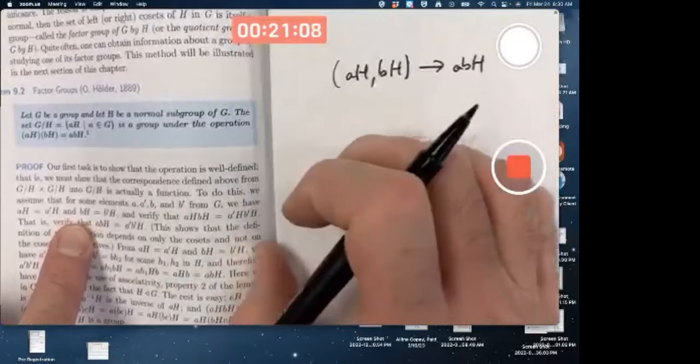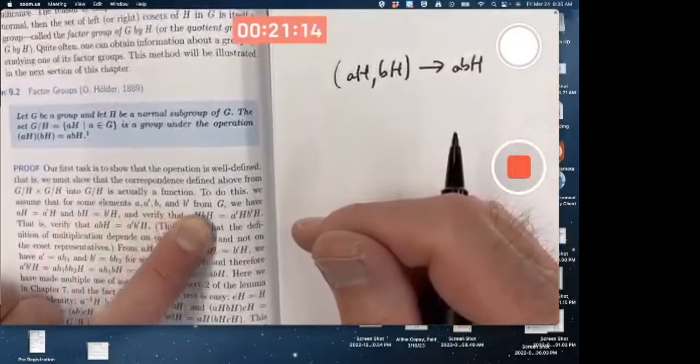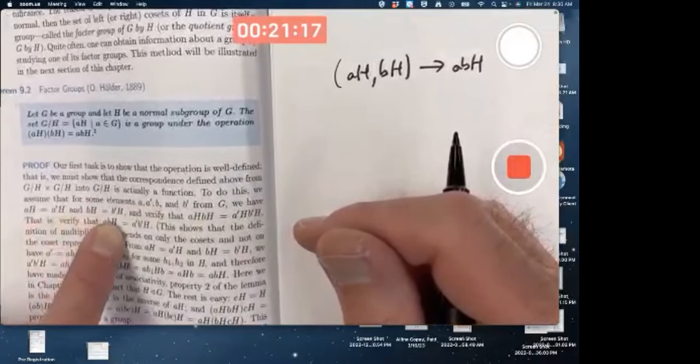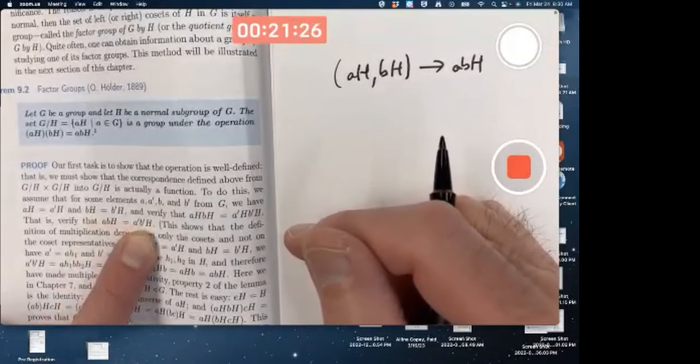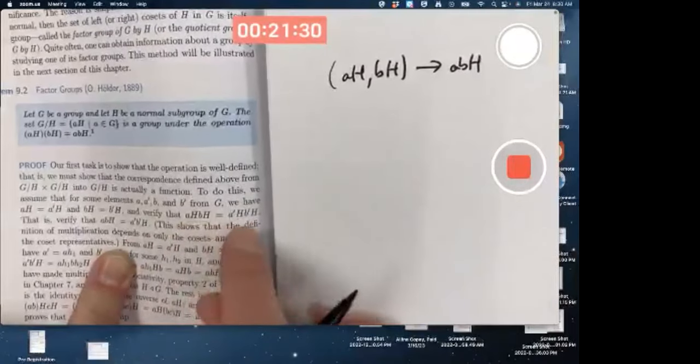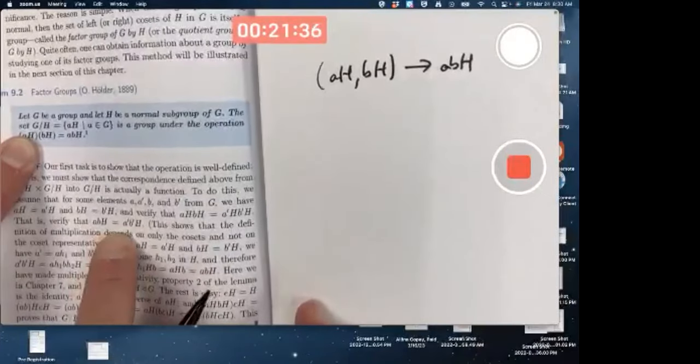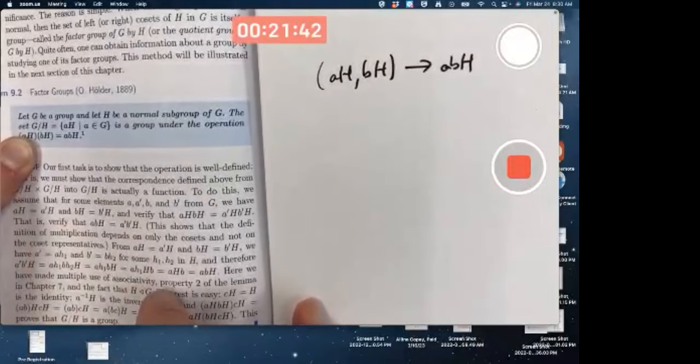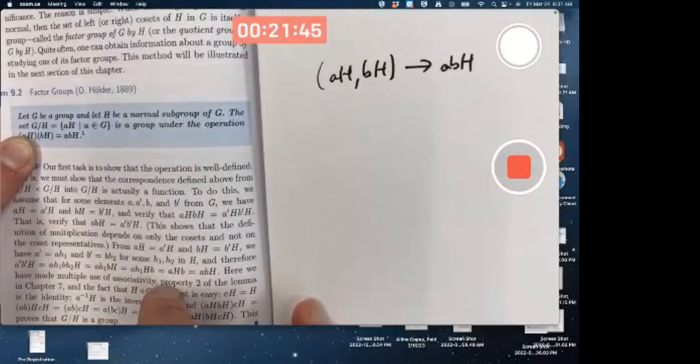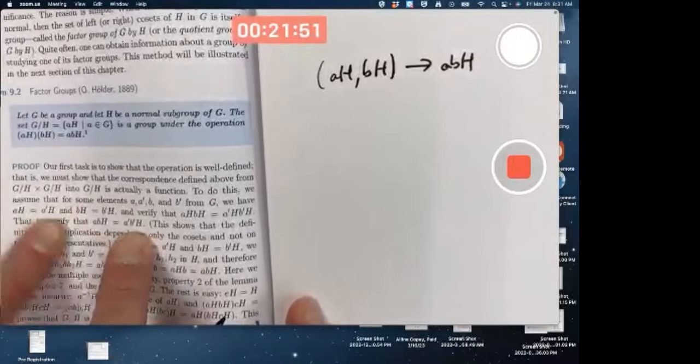So, how do you go about doing that? To do this, we assume that for some elements A, A prime, B, and B prime from G, we have the equality of those cosets. Where A and A prime could be different and B and B prime could be different, but the cosets are the same. We need to verify that we get the same thing when we multiply cosets according to this formula. In other words, we need to verify that these two left cosets are the same. That would mean the coset representative doesn't matter.